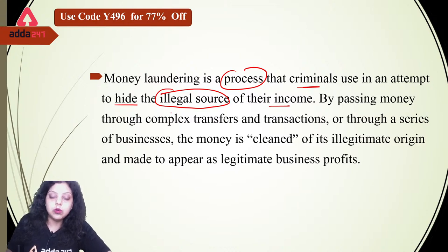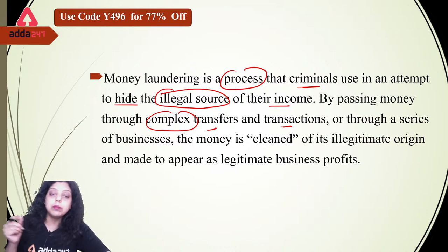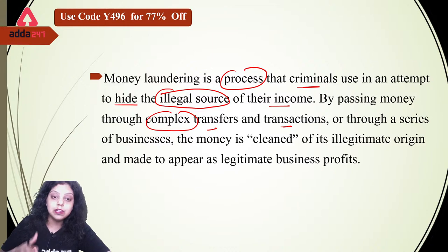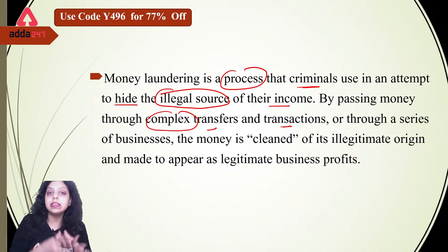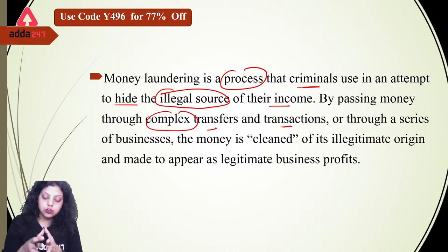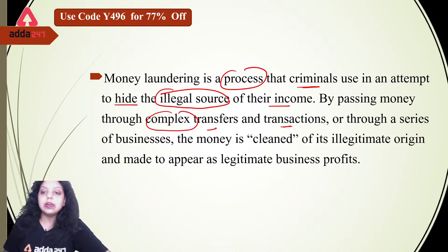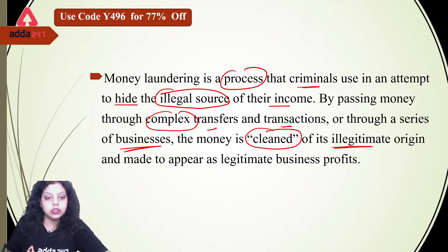By passing the money through complex transfers and transactions. There are three stages in money laundering: placement, layering, and integration. When we are talking about layering, we maintain or create a complex network of transactions. So when a criminal is trying to hide his or her illegal source of income, this person tries to create a complex network of transactions or transfers or through a series of businesses, the money is cleaned of its illegitimate origin and made to appear as legitimate business profit.